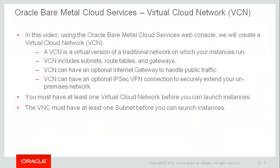In this video, we'll use the Oracle Bare Metal Cloud Services web console to create a virtual cloud network, a VCN. A VCN is a virtual version of a traditional network, including subnets, route tables, and gateways on which your bare metal cloud instances run. You can configure the virtual cloud network with an optional internet gateway to handle public traffic. You can also configure it with an optional IPsec VPN connection to securely extend your on-premises network.